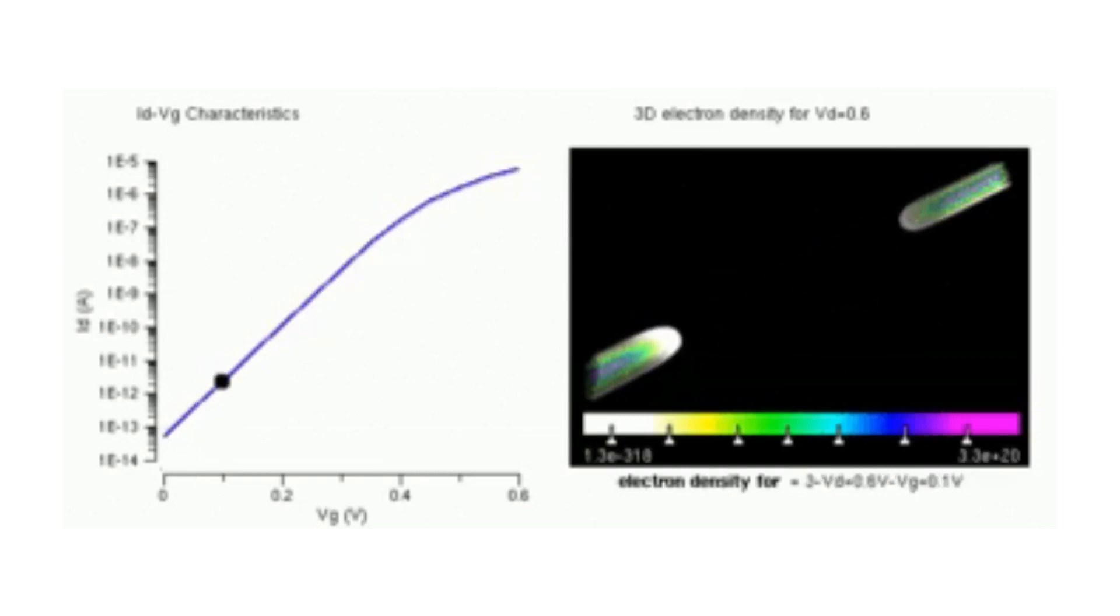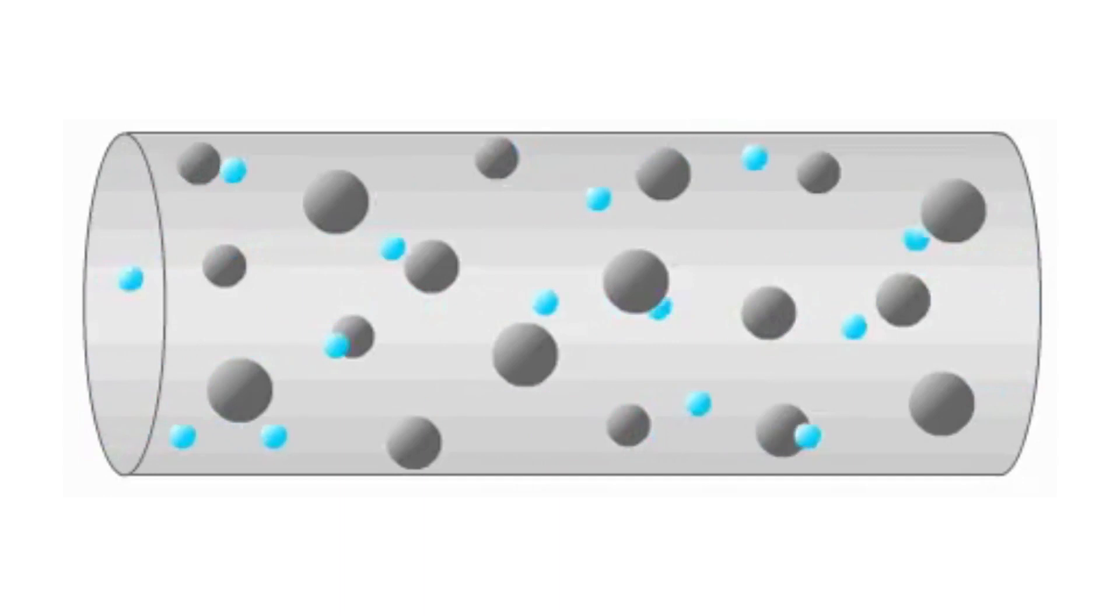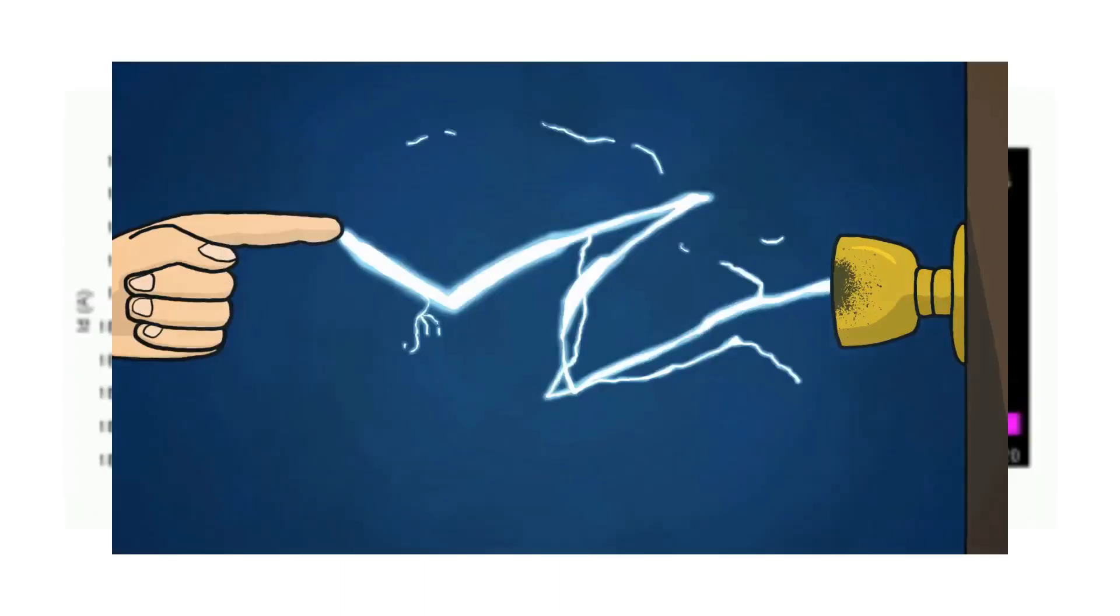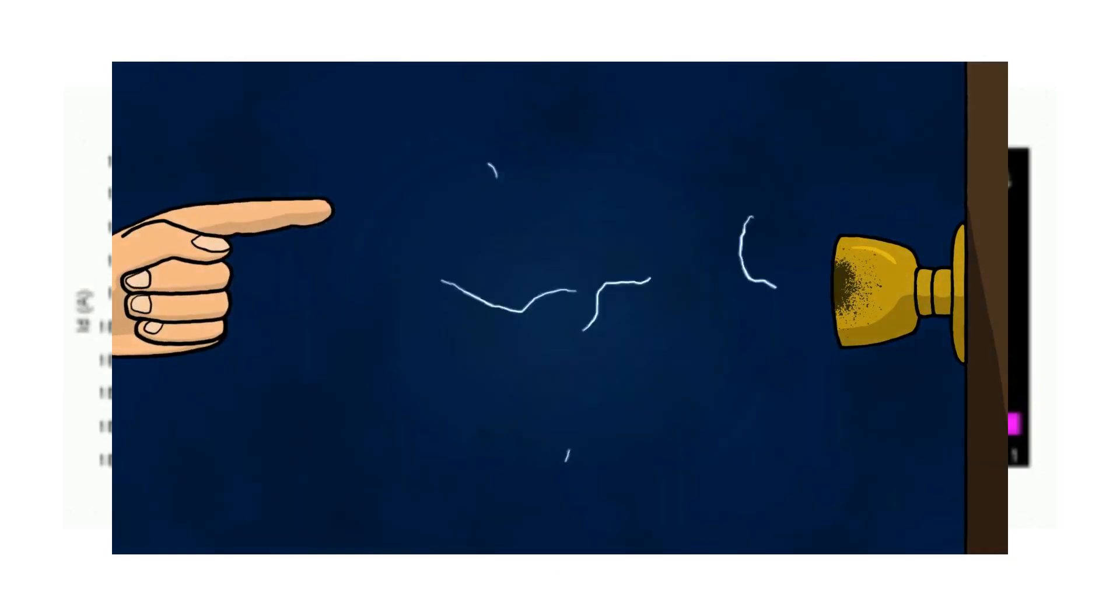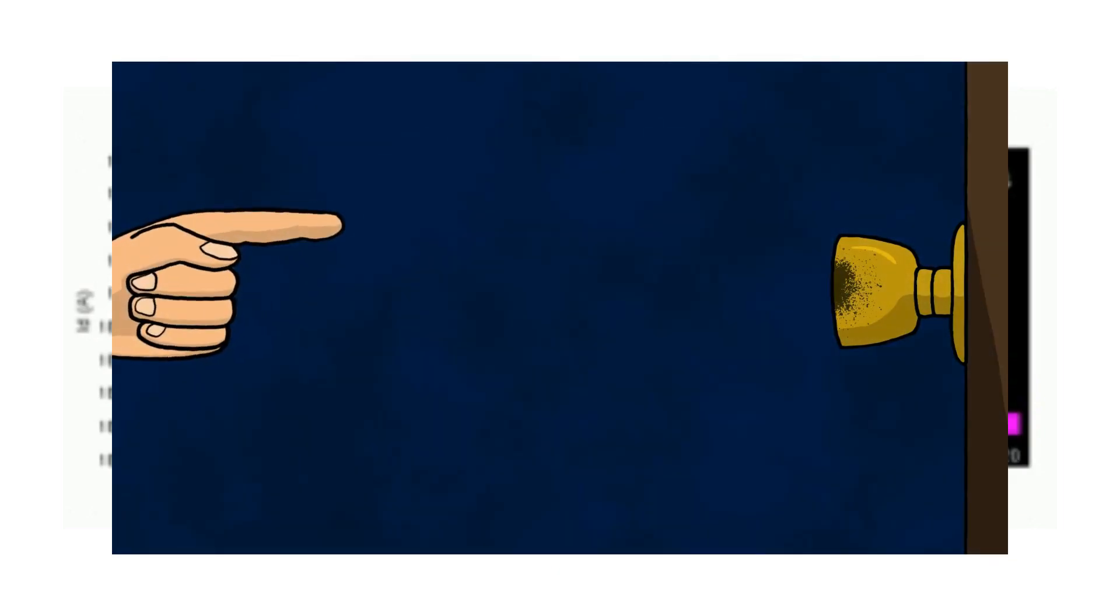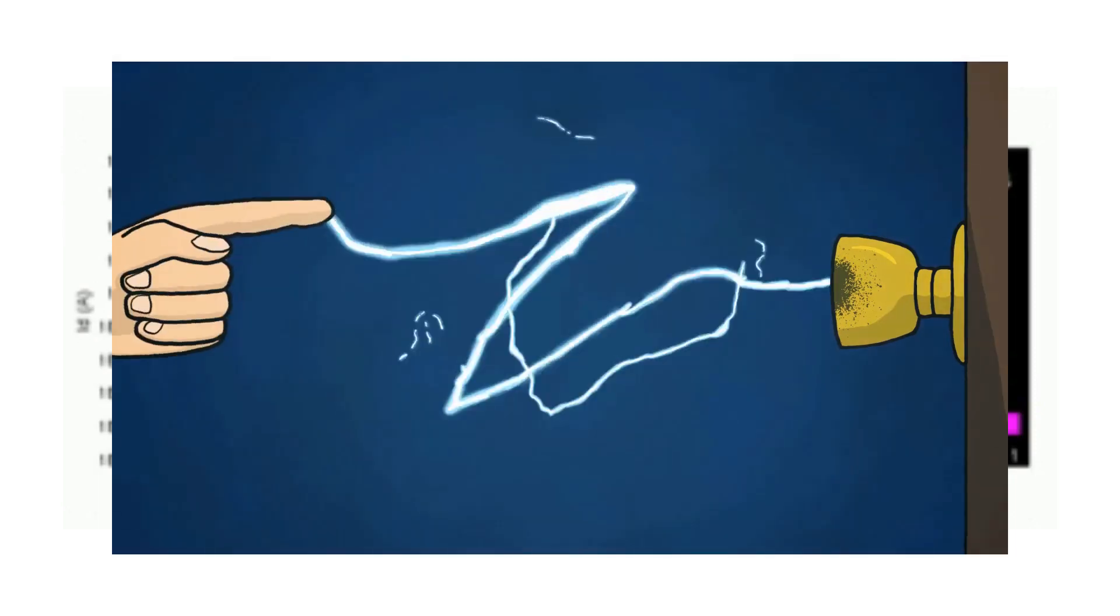Also like the JFET, the metal oxide semiconductor field-effect transistor's very high input resistance can easily accumulate large amounts of static charge, resulting in the MOSFET becoming easily damaged unless carefully handled or protected.